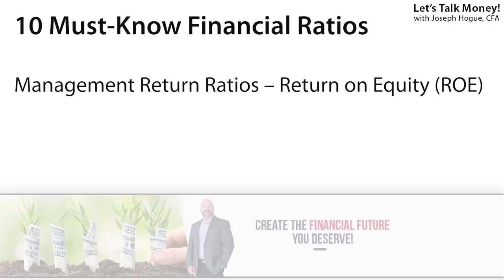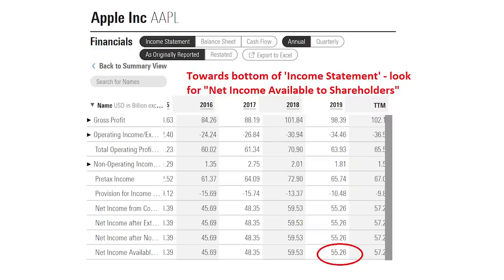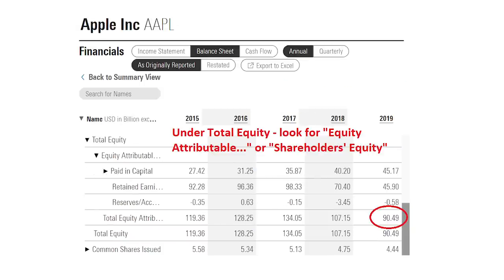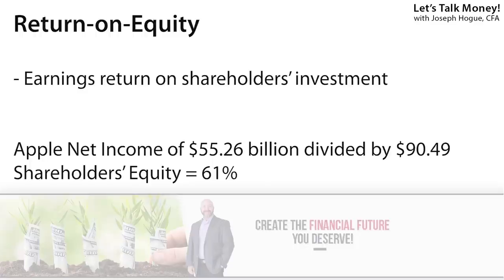Our next ratio is a great one for measuring management's ability to get the best return on your money: the return on equity, or ROE. Return on equity is super simple to calculate — you just take the company's net income from the income statement and divide by the shareholders' equity, which is one of the last lines on the balance sheet. ROE shows you how much money management is able to produce each year on the equity ownership in the company — it's how much the shareholders get as an earnings return on their money.